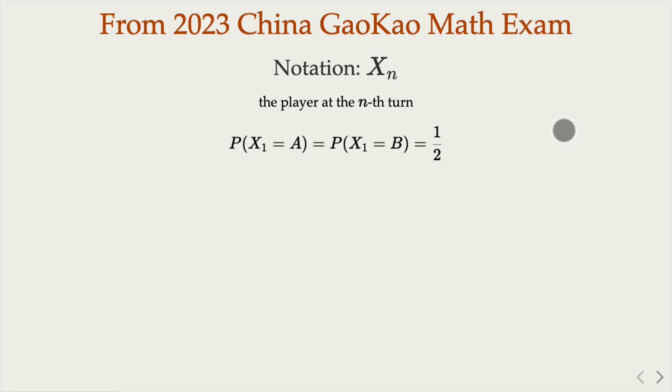What we are asked to find are these two quantities: P(X₂ = B), meaning Bob, or P(X_n = A), Alice. To answer the first question, it is important to use conditional probability.